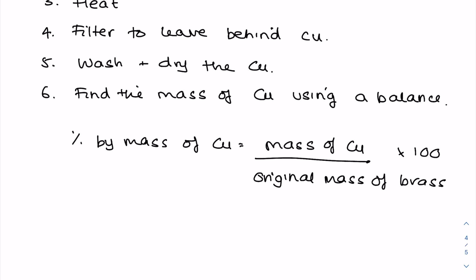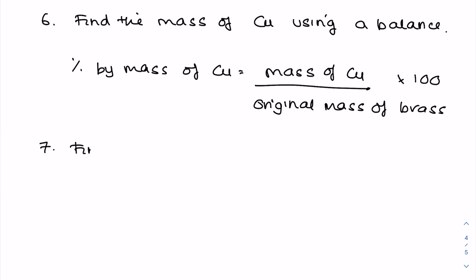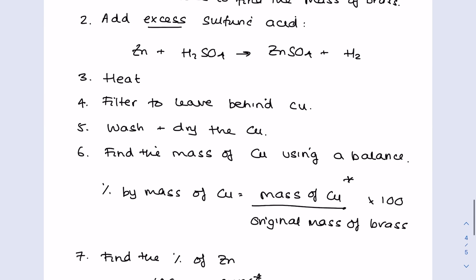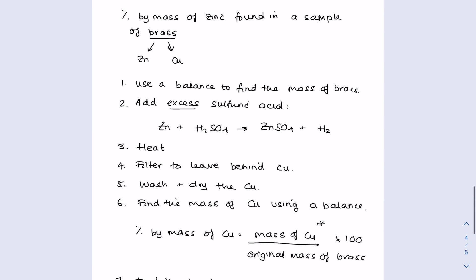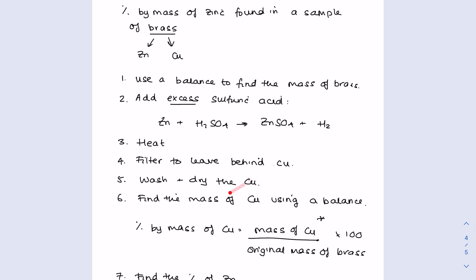And then your last step is to find the percentage by mass of zinc by doing 100 minus your answer from the previous step. So obviously this is a very specific example where we're interested in finding the percentage by mass of zinc in a sample of brass, but these sorts of questions come up an awful lot. Be very aware of the reactivity series, so know which of these elements will react. Make sure that you're adding an excess of the acid to force that zinc to fully react, and by doing that you'll just be left in this case with the copper so you can then find out the percentage by mass of copper in the sample before doing 100 minus the answer to find the percentage by mass of zinc.